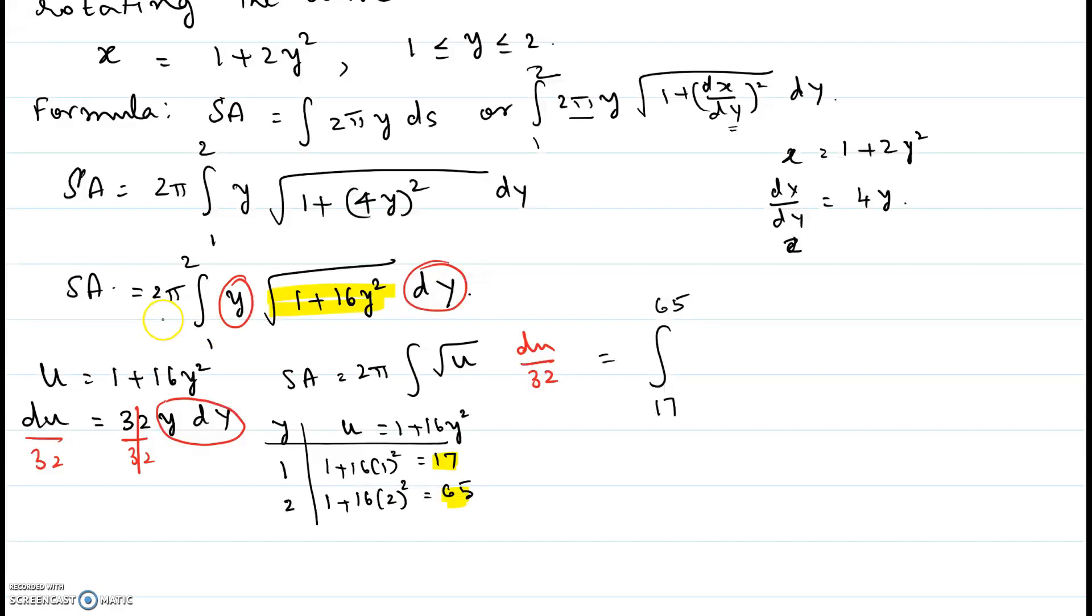Lower limit is 17, upper limit is 65. And we have 2π outside. That is integral of u, and then 32 can also be taken outside. Then it's square root of u, or u to the one-half du. It is π over 16 when you reduce it.